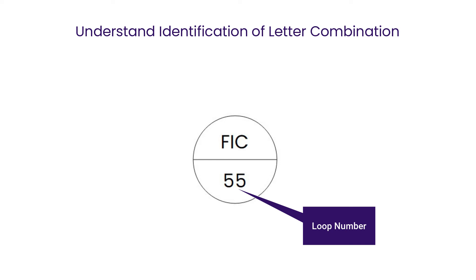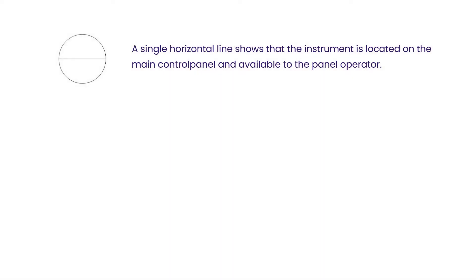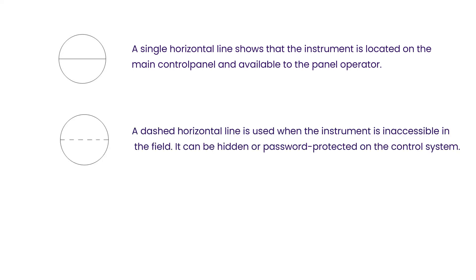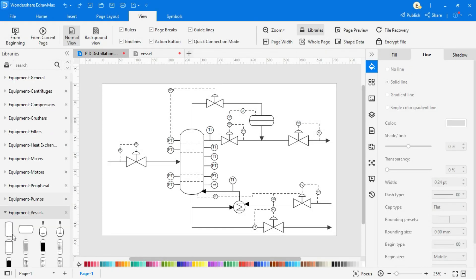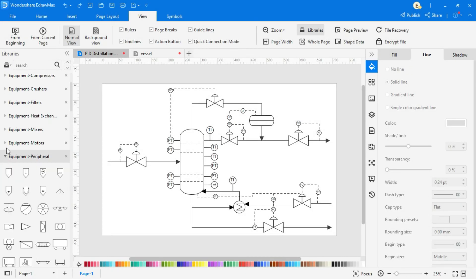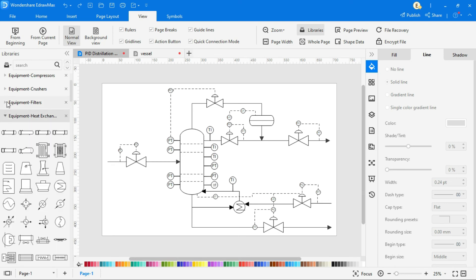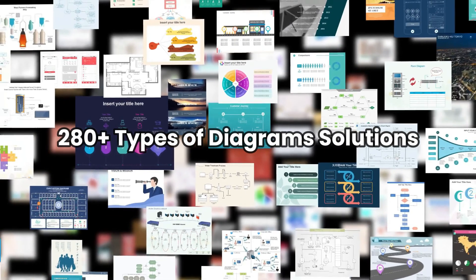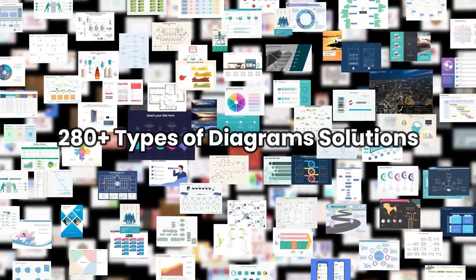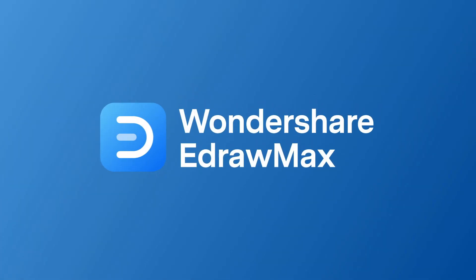A direct line denotes an instrument located on the main control panel and available for the panel operator. A dashed line denotes a behind-control-panel remote location. No line means it is a field mounted instrument accessible for the operator. We can find all kinds of PID symbols in the eDrawMax symbols library. Please find the link in the description below to try eDrawMax online or download the software. Thanks for watching and don't forget to subscribe to our channel for more videos.